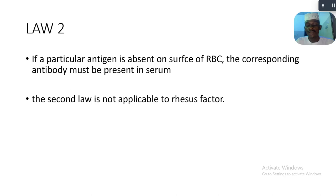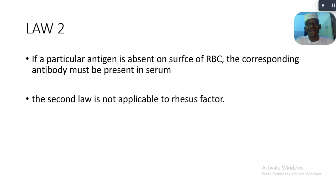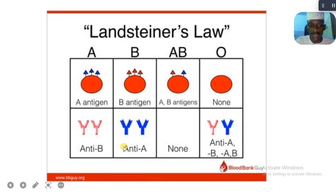Law Number Two states: if a particular antigen is absent on the surface of the RBC, the corresponding antibody must be present in serum. However, the second law is not applicable to the Rhesus factor. So when you see antigen A, you won't see antibody A in the serum — rather you see antibody B, and so forth.